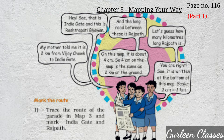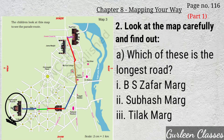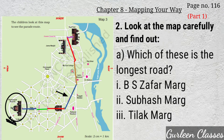Now mark the route — trace the route of the parade in Map 3 and mark India Gate and Rajpath. Now let us do question number 2: look at the map carefully and find out — Part A — which of these is the longest road? Number 1: Bahadur Shah Zafar Marg, marked here in brown color — measuring with the scale it is around 3 cm. Then Subhash Marg, marked in red, it is around 4 to 4.5 cm. Next, Tilak Marg, marked in blue, it is around 3.8 cm. So which is the longest road? The second option — Subhash Marg.